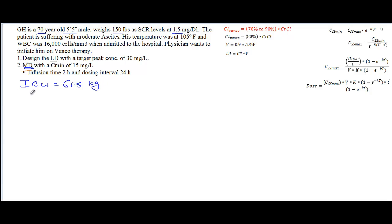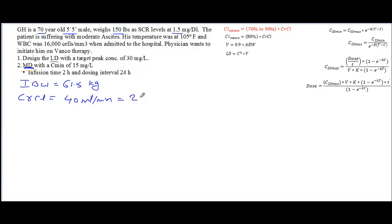With that, we calculate the first step: creatinine clearance. Again, if you don't know how to calculate creatinine clearance, take a look at the video on the Cockcroft-Gault equation on my blog. The creatinine clearance is 40 ml per minute, and the conversion into liters gives 2.4 liters per hour.